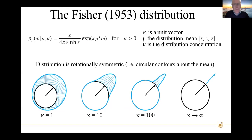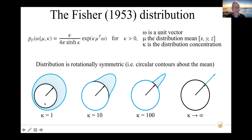What I'm going to talk about is underpinned by the Fisher distribution — something familiar to all of us as paleomagnetists. Here's the equation for the Fisher distribution as defined in Fisher's 1953 paper, in its matrix form using Cartesian coordinates. The distribution is defined by a mean mu and kappa, which is the concentration. The distribution is rotationally symmetric, with circular contours around the mean. When kappa is low, the distribution is very broad; as kappa increases, the distribution gets narrower, until at infinity it's infinitely thin.